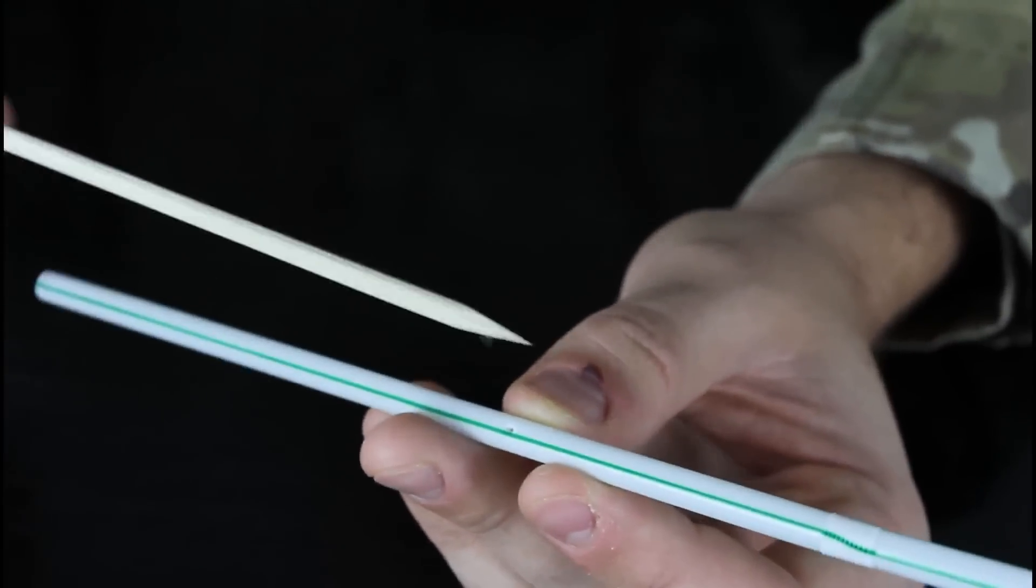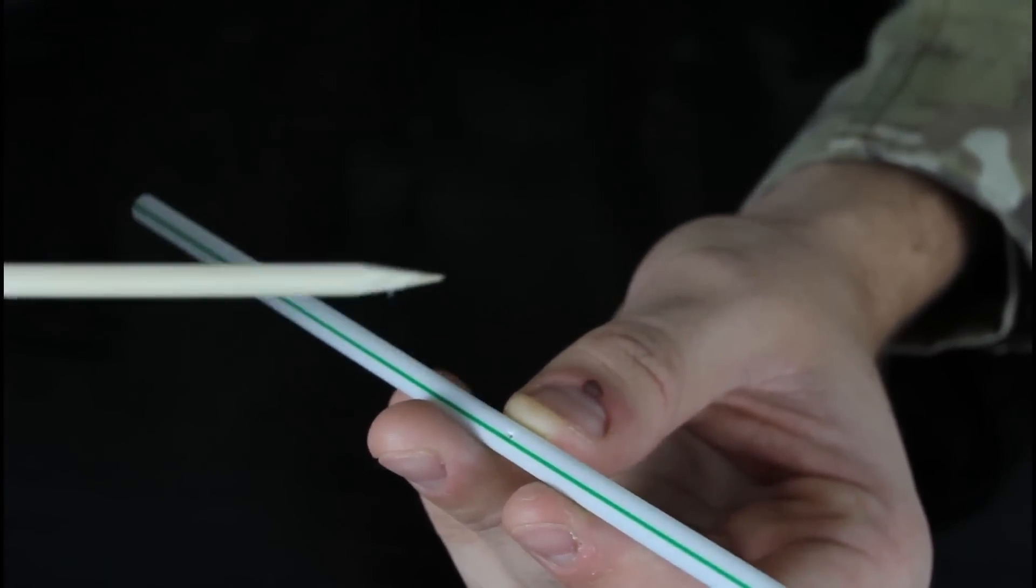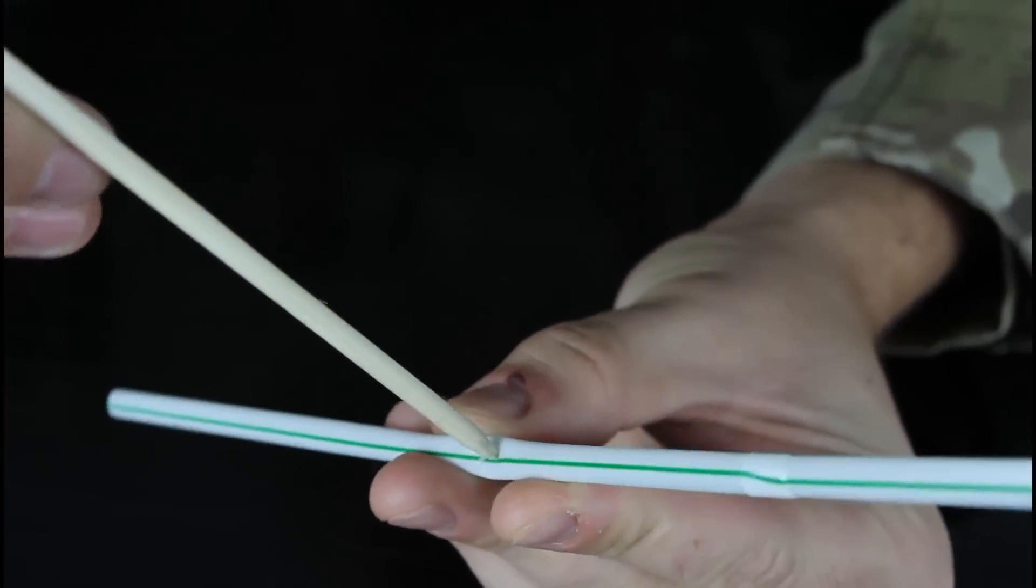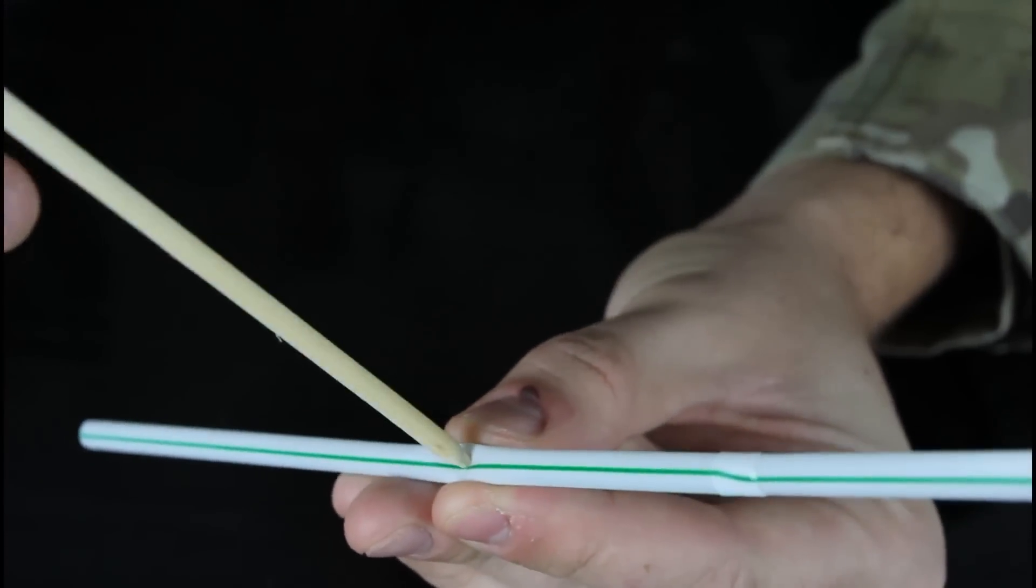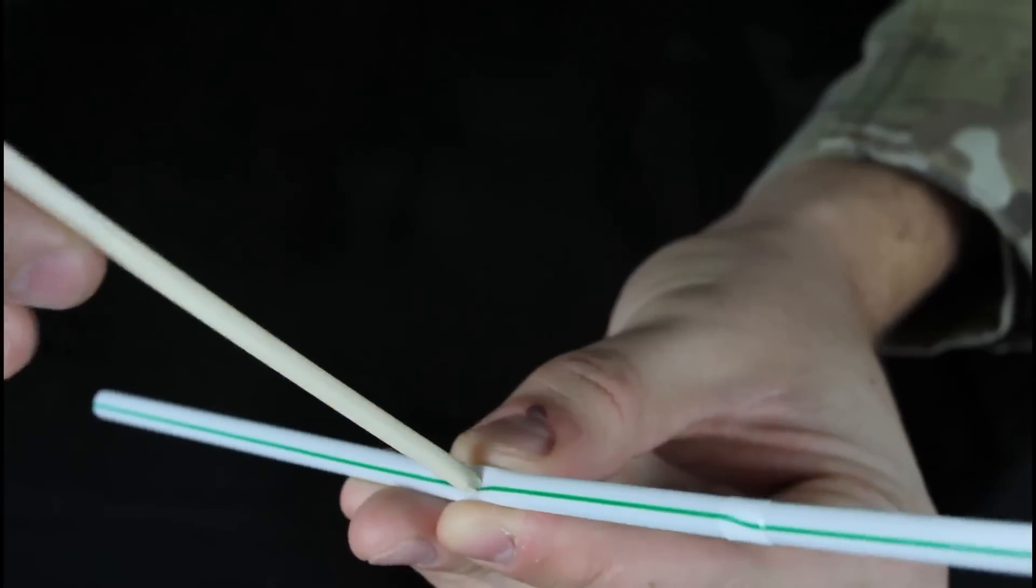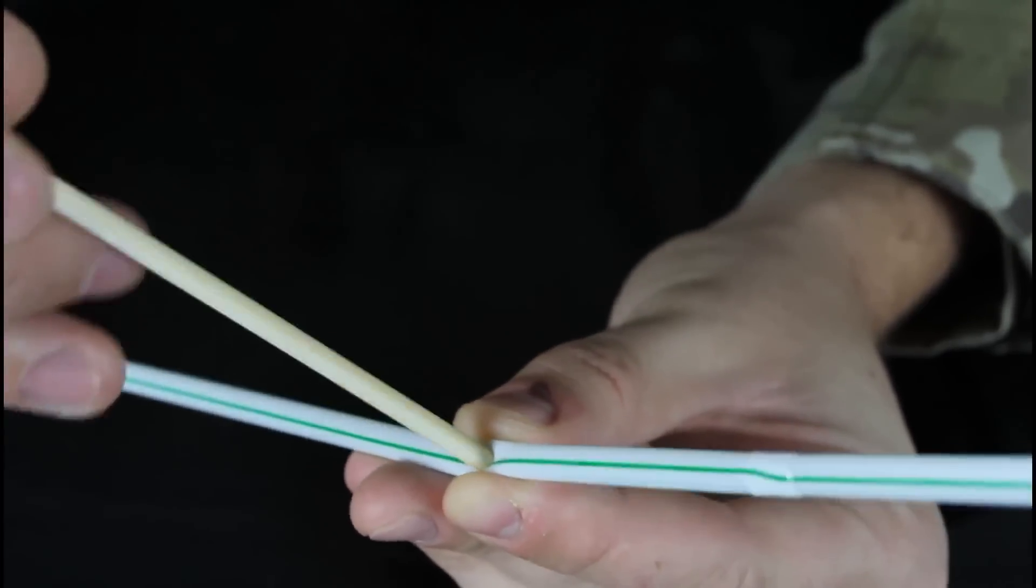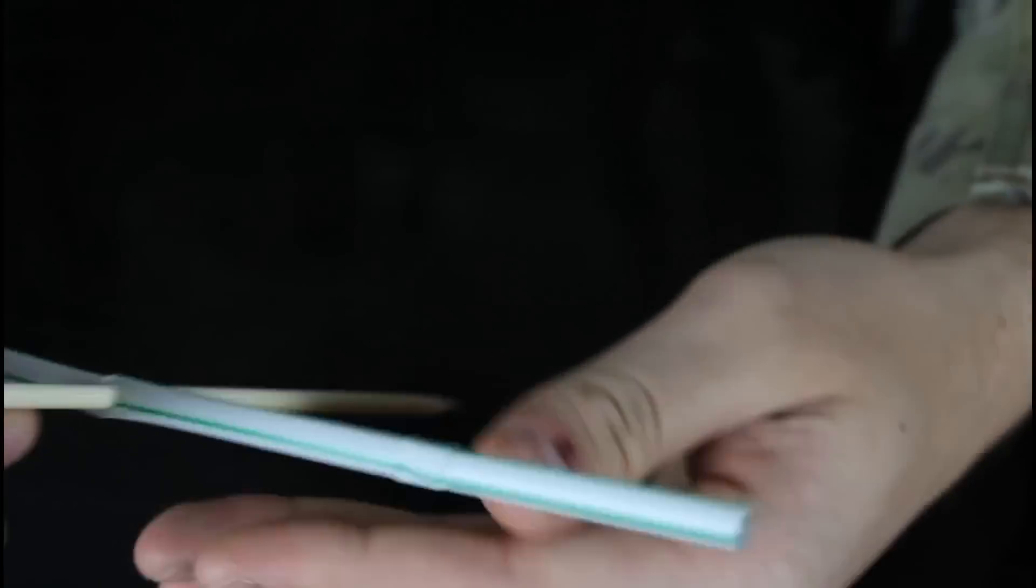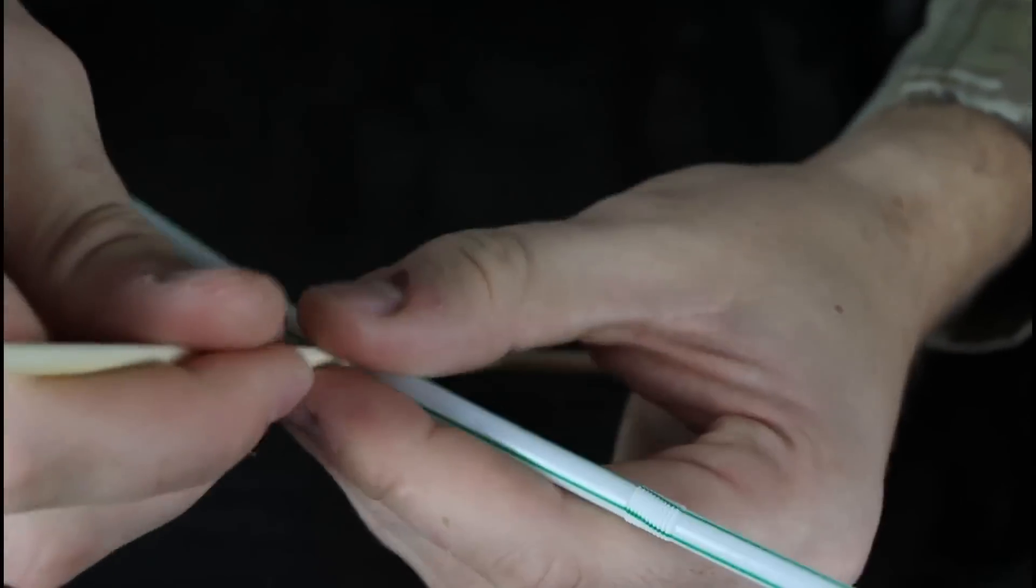First thing we're gonna do is find the middle in a straw. And just—you see how that's pointy, like sharp? So we're just gonna make a hole, just like that. Kinda twist it and turn and put it through, probably like halfway. Alright.